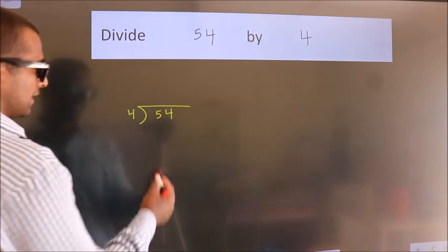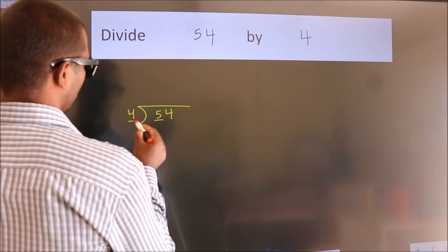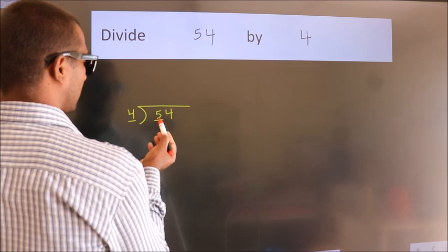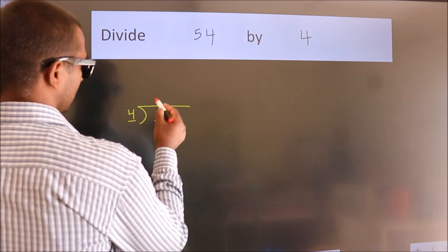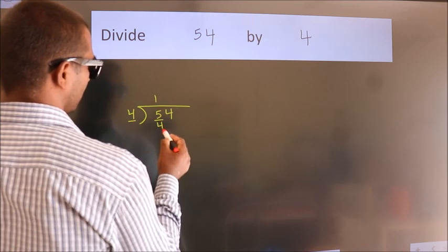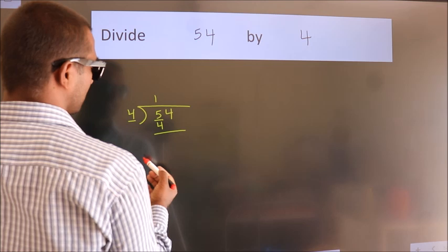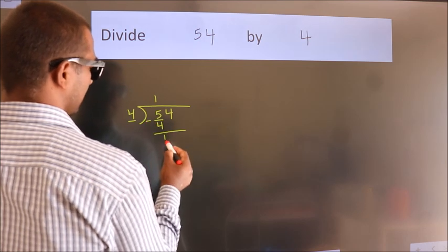Next. Here we have 5, here 4. A number close to 5 in the 4 table is 4 once 4. Now we should subtract. We get 1.